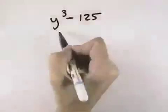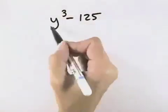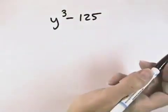We want to factor the polynomial y cubed minus 125. There's two terms, and they're perfect cubes, with no greatest common factor.